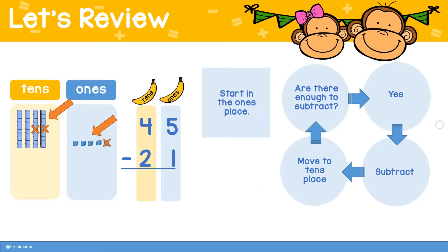So let's recap. Remember, modeling with base ten blocks helps us to see what we're doing when we regroup. We start in the ones place and ask ourselves, are there enough to subtract? If there are, then we can simply subtract. Five minus one equals four, and then move to the tens place.